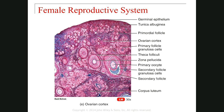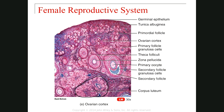After ovulation, when the follicle loses its oocyte, the granulosa cells and teca layers remain in the ovary and form the corpus luteum. If fertilization takes place and we have pregnancy, this corpus luteum makes progesterone to maintain the pregnancy for about two to three months. If there is no fertilization, the corpus luteum regresses and becomes the corpus albicans.